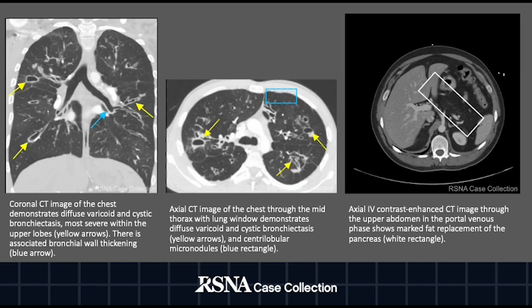The radiological investigation of this patient starts with CT images of the chest and upper abdomen. The yellow arrows, visualized in the coronal and axial planes of the chest CT, represent diffuse peribronchial and cystic bronchiectasis through both sides of the lungs. The blue arrow represents bronchial wall thickening seen in the left side of the lung, and the blue rectangle represents centrilobular micro nodules.